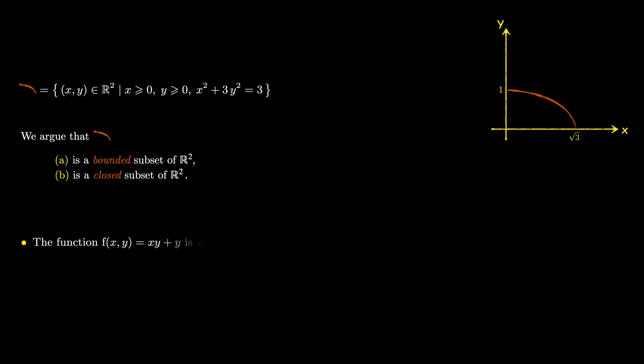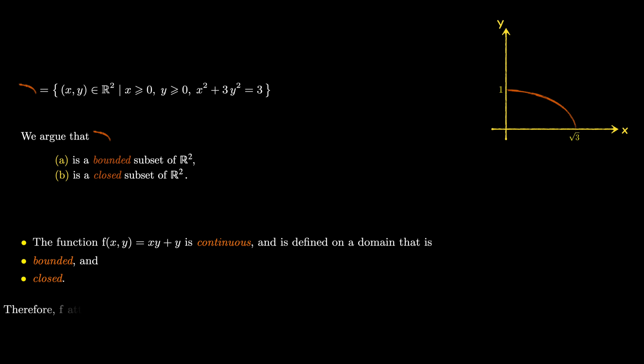So what do we have so far? We are given a function f(x, y) = xy + y. We know it's a continuous function because it's a polynomial, and polynomial functions are continuous everywhere, including on the given domain. We also know that the domain is bounded and closed. By the extreme value theorem, f attains its maximum and minimum on this domain.